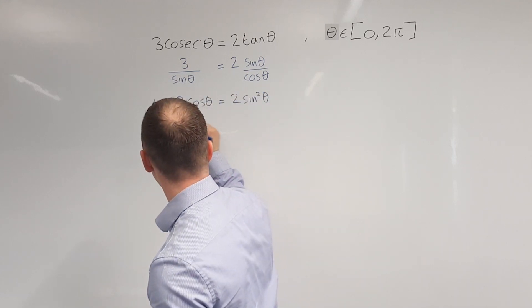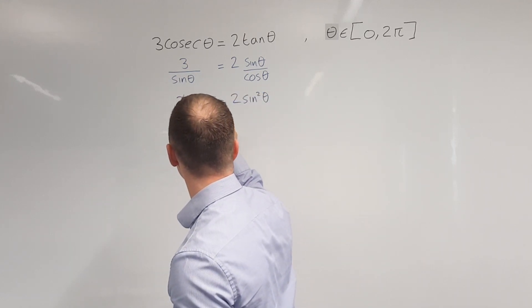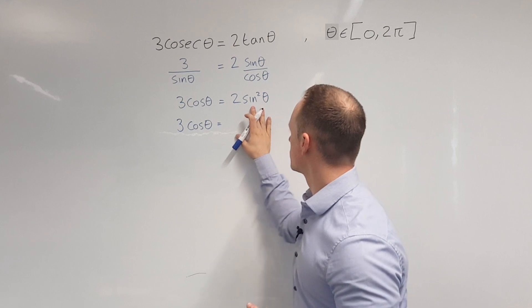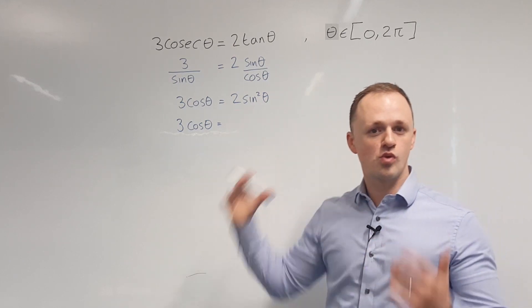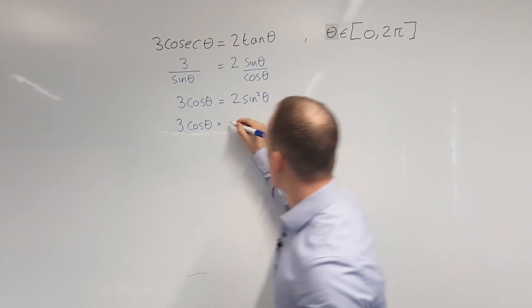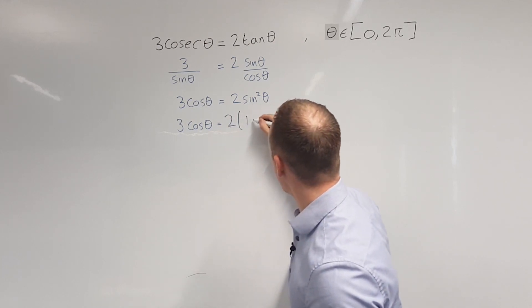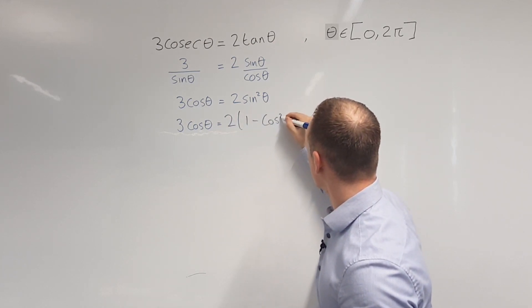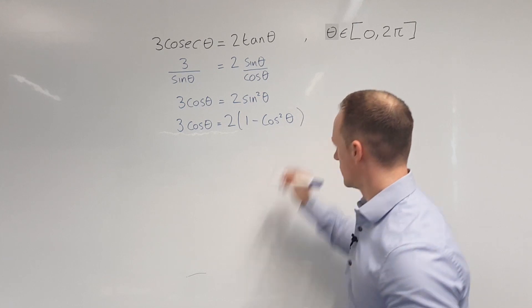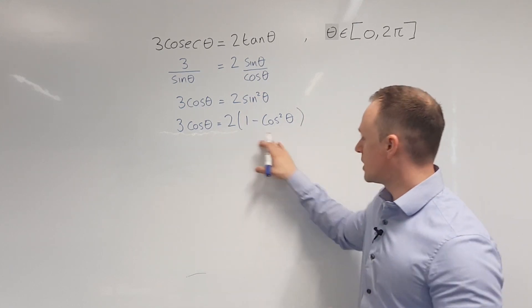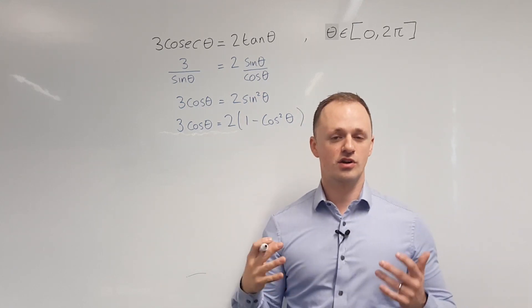So we'll leave the left-hand side as 3 cos theta. And we'll write sine squared theta as 1 minus cos squared theta. Make sure you put it in a bracket so I've got two lots of 1 minus cos squared theta. And now I've got a quadratic that's all in terms of cos theta.